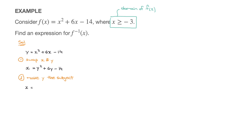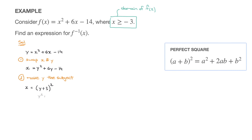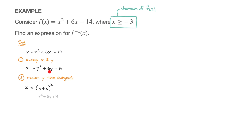So x equals... the first two terms we have, y squared plus 6y, are the same first two terms we get in the expansion of (y + 3) squared. If we open this up using our perfect squares formula, we'd obtain y squared plus 6y plus 9. We can clearly see the first two terms of this expansion match what we have. But the right-hand side needs to equal y squared plus 6y minus 14, whereas what we've written equals y squared plus 6y plus 9. So to make both sides equal, we subtract 23. Since (y + 3) squared equals y squared plus 6y plus 9, taking 23 away gives us y squared plus 6y minus 14. We've now completed the square on the right-hand side.